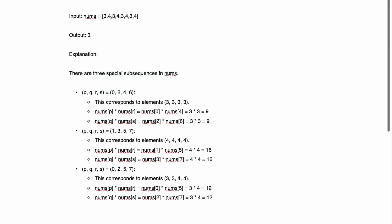Looking at the example [3,4,3,4,3,4,3,4], the output is 3. The first special subsequence uses indices 0, 2, 4, 6 — all 3s. Multiplying nums[0]*nums[4] = 9 and nums[2]*nums[6] = 9, these are equal. The second uses indices 1, 3, 5, 7 — all 4s, giving 16 for both products. The third uses indices 0, 2, 5, 7 — values 3, 3, 4, 4 — giving 12 on each side.